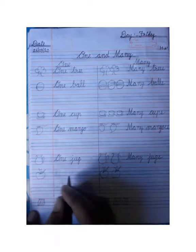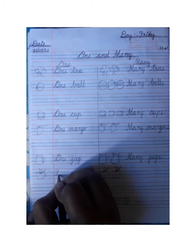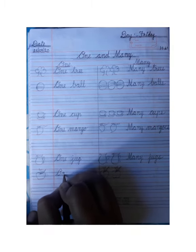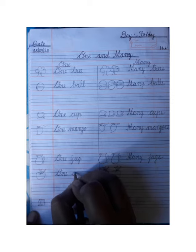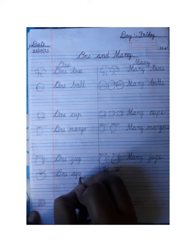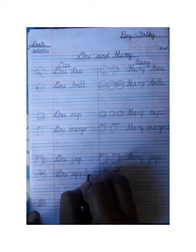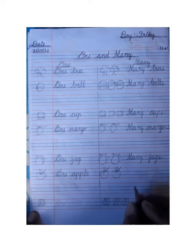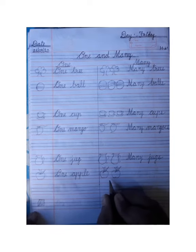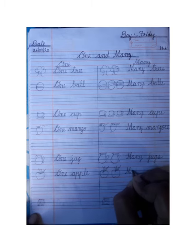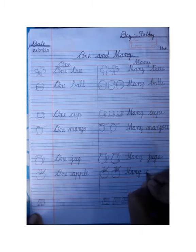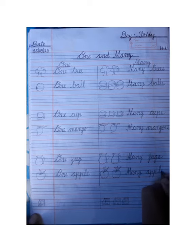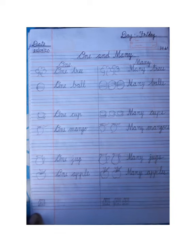This side has one apple, so we will write: One apple, A-P-P-L-E. One apple. And on this side there are many apples, so we will write: Many — M-A-N-Y — apples, A-P-P-L-E-S. Many apples.